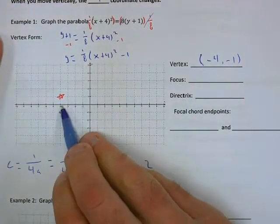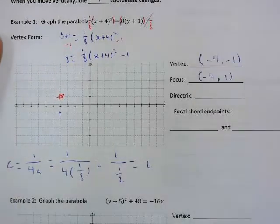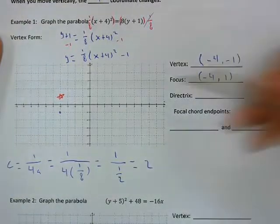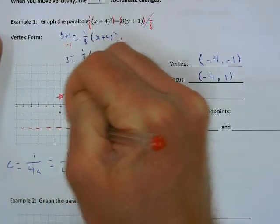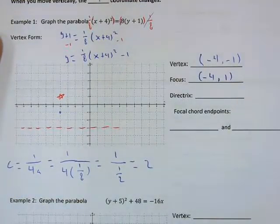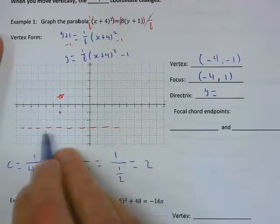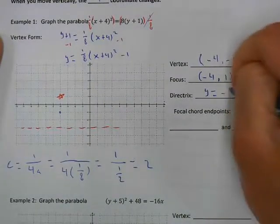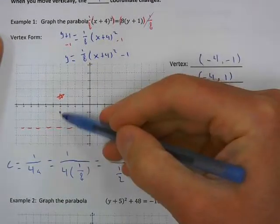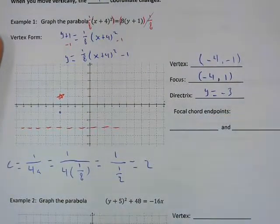Our focus is at (-4, 1). Since our focal length is 2 and we went up 2 to the focus, we go down 2 to our directrix. Since this is an up-down parabola, the directrix is a horizontal line. Every point on the line has the same y value — two units below the vertex (y = -1), going down 2 gives us y = -3. So the directrix is y = -3.